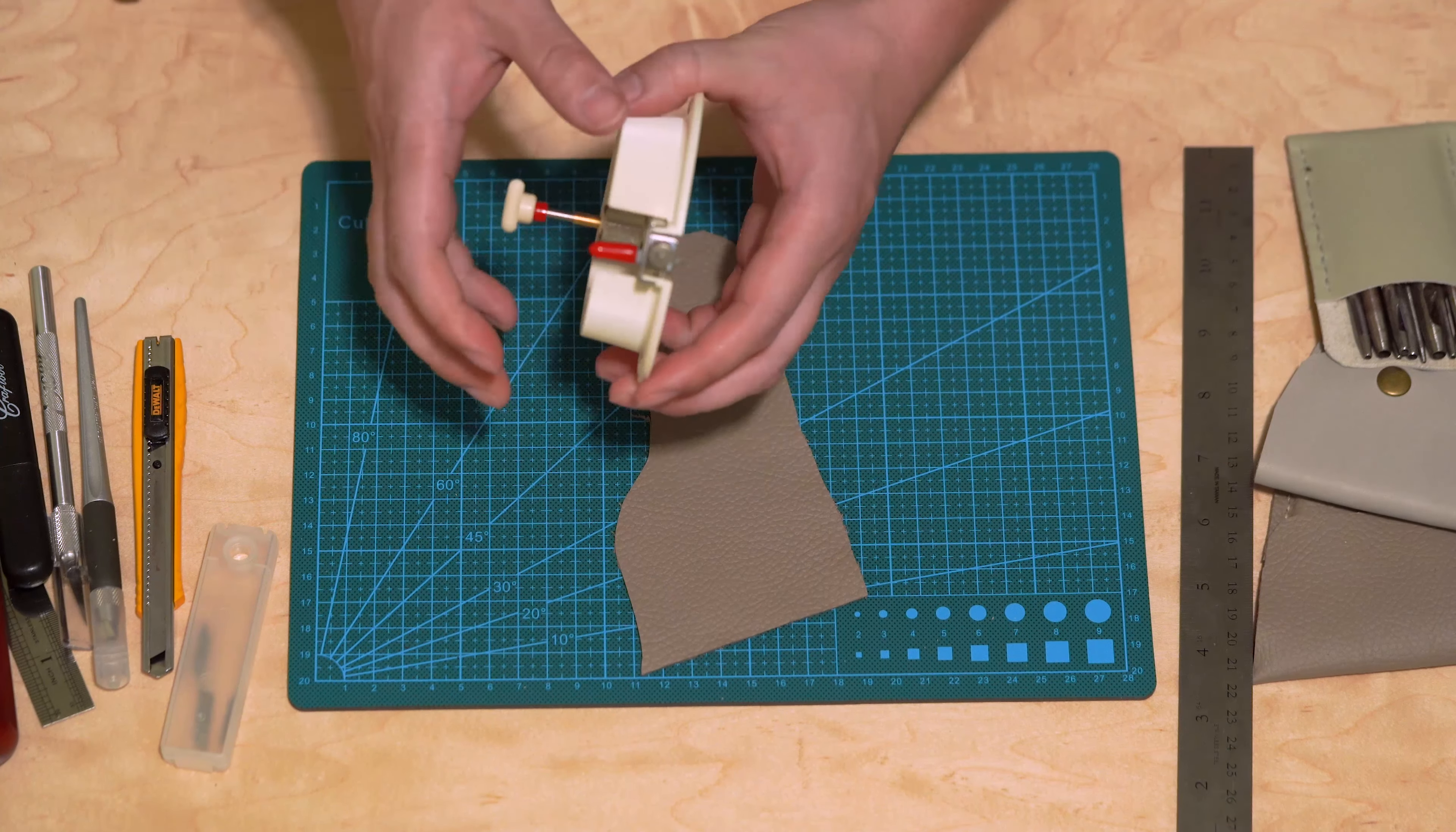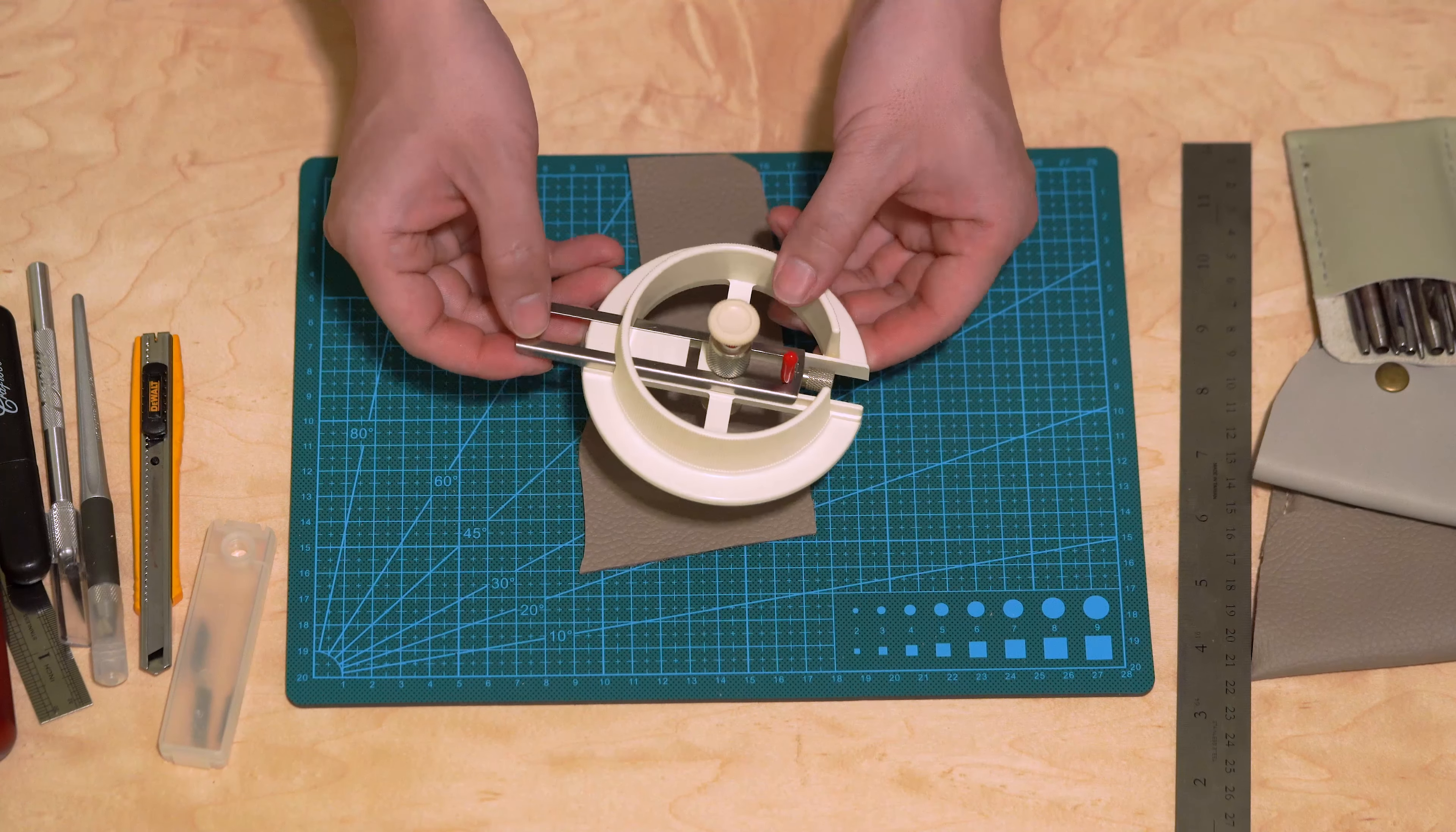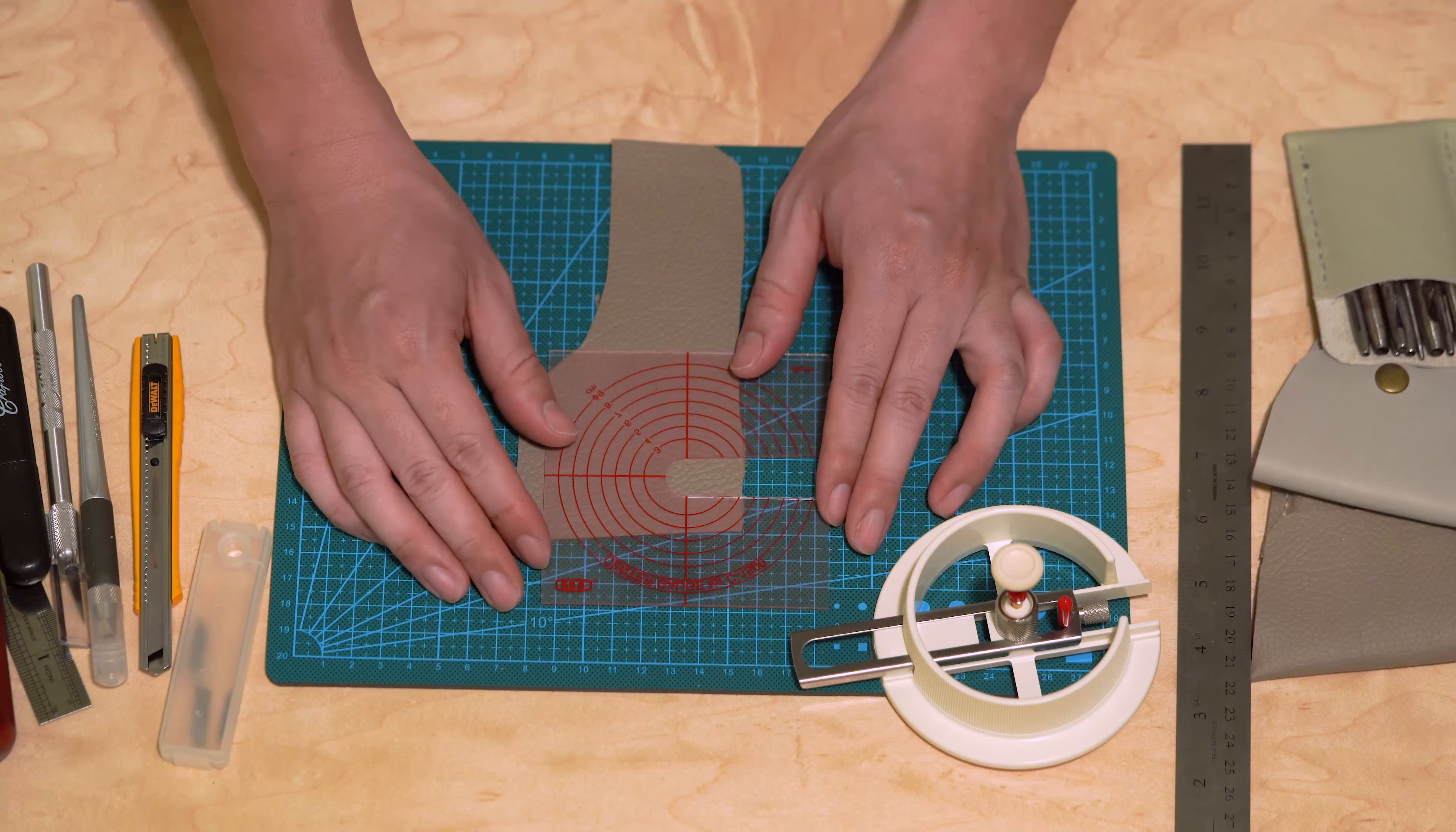You have to be really careful when you're handling this because the blade is exposed and it's really really sharp. Since it's a small scrap I'm gonna use just a smaller circle. I set that and it's ready, and I'm gonna use this gauge to see where I want my circle to be cut exactly.